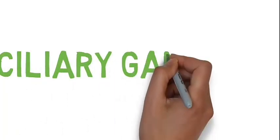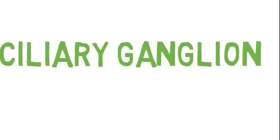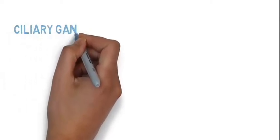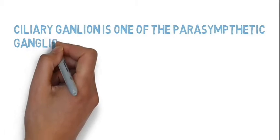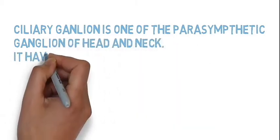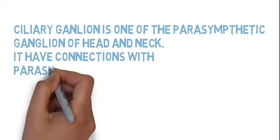Today I'm going to tell you about the ciliary ganglion. The ciliary ganglion is one of the parasympathetic ganglia of the head and neck. It has connections with parasympathetic, sensory, and sympathetic fibers.